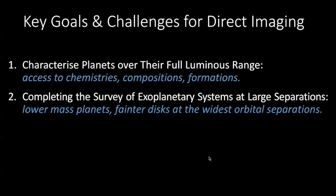I've highlighted a couple of key goals and challenges for exoplanet direct imaging. First, we'd really like to characterize planets over their full luminous range — we've never done this, and it's going to give access to chemistries, compositions, and maybe something about their formation. At the same time, we'd like to complete the survey of exoplanetary systems at large separation where we really don't have any information now, giving us access to lower mass planets and fainter disks at the widest orbital separations.